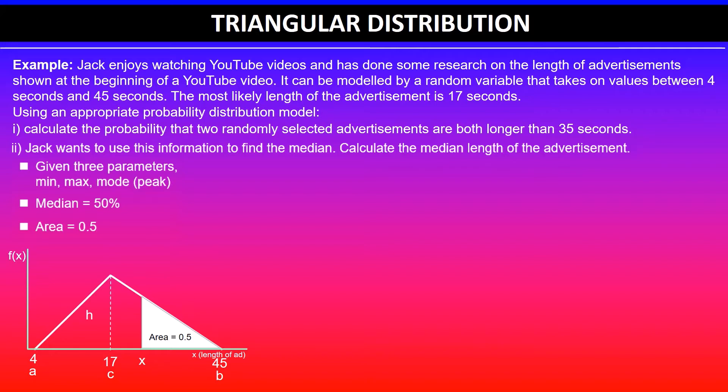The height is given by 2 over (b minus a), and b is 45. So that simplifies to 2 over 41, which is 0.0488.